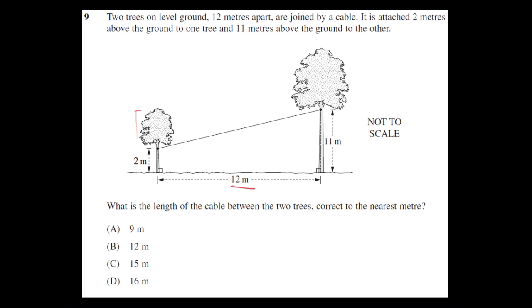We're told that a cable is attached to both trees. So one attachment is on one tree two meters above the ground here. The other attachment is on the other tree 11 meters above the ground. And so this is my cable here. And that's the level ground. So it looks a bit like a trapezium, these two sides being parallel.